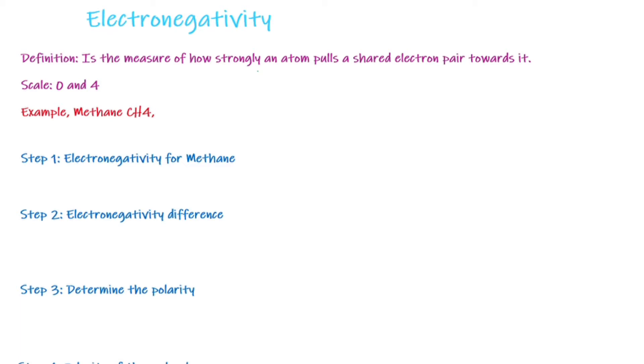What is electronegativity? By definition, it is the measure of how strongly an atom pulls shared electron pairs towards itself. Therefore, the greater the electronegativity of an atom of an element, the stronger the attractive pull of electrons. And the opposite is also true.